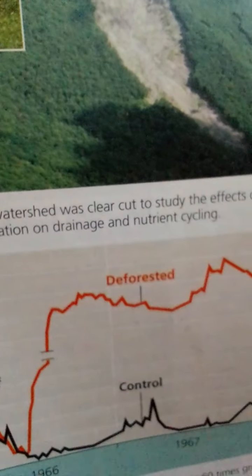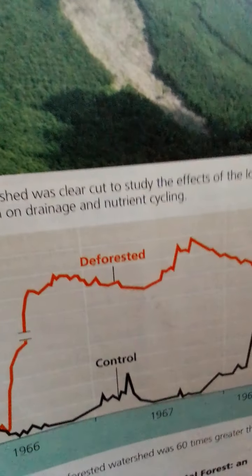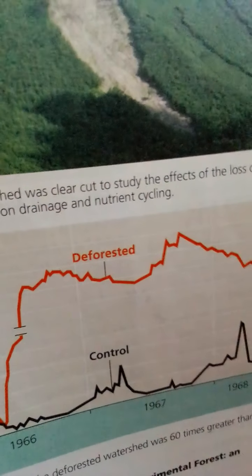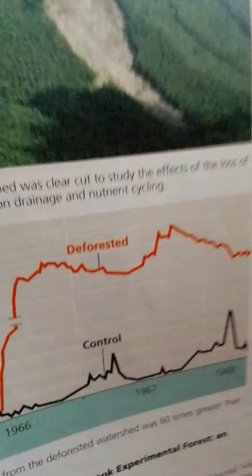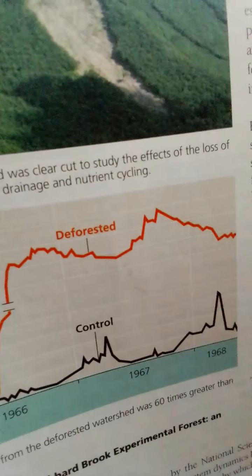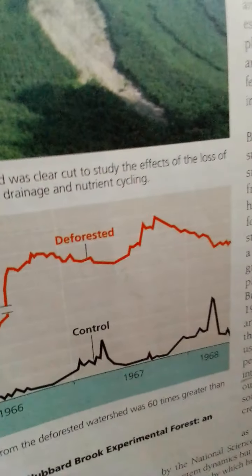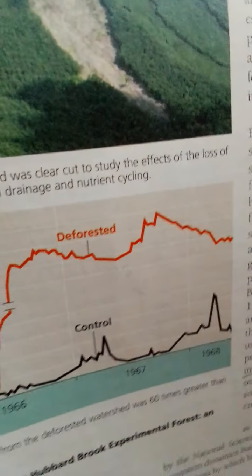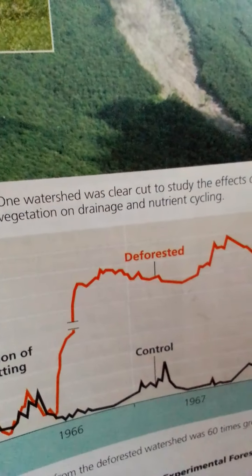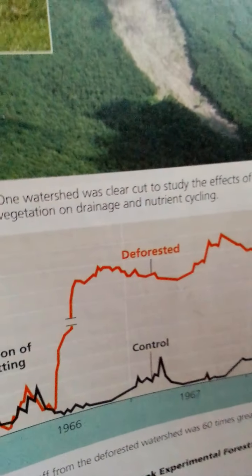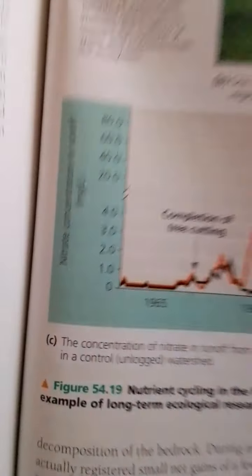In one experiment, all the trees in one valley were cut down, and then the valley was sprayed with herbicides for three years to prevent plant regrowth. All the original plant material was left in place to decompose. The inflow and outflow of water and minerals in this experimentally altered watershed were then compared with those of a control watershed.